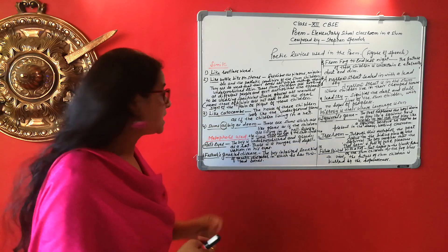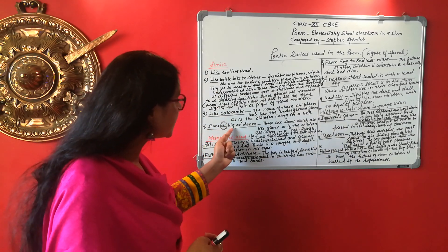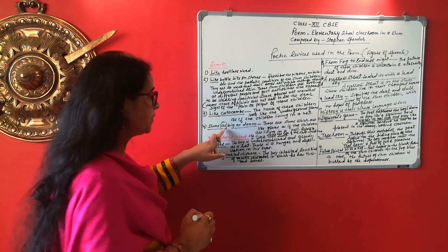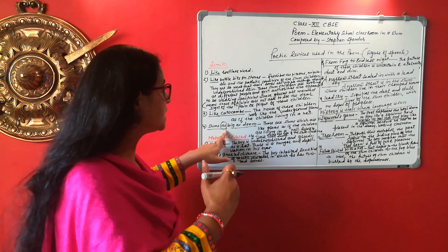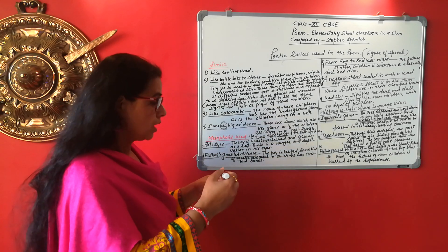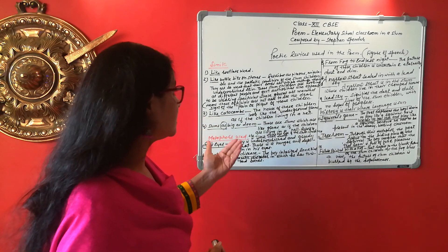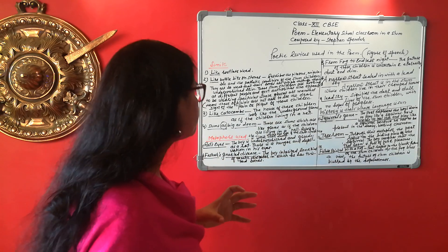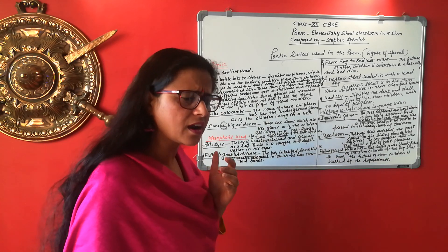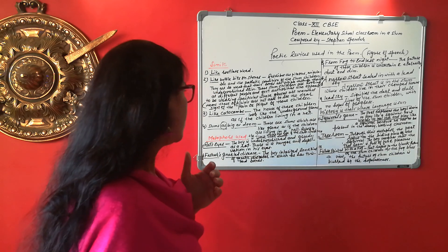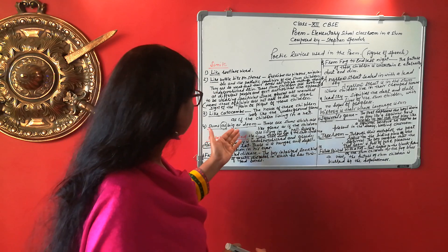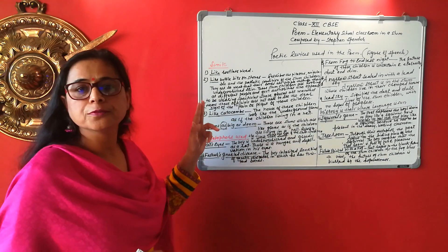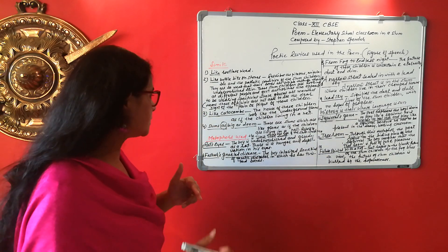The next example of simile is 'slum as big as doom.' The word 'as' is used here, so again it is a simile. These slums are like a grave for these children — they are living just like in hell. These were the examples of simile. Now let's move to the metaphors.